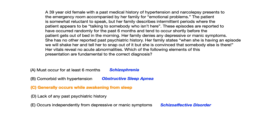Choice A — must occur for at least six months — is timeline criteria for schizophrenia. The test writer threw you a curveball by mentioning that these hallucinations have been occurring for at least six months, but you need to figure out from the passage that it's probably not schizophrenia and that hypnopompic hallucinations are a better answer. They're a better answer because the episodes occur while awakening and the person has a past history of narcolepsy.